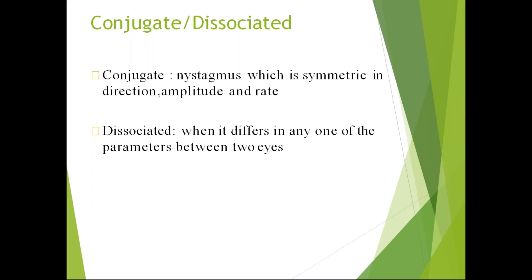Conjugate means symmetric in direction, amplitude, and frequency — the rate is the same in both eyes. Dissociated means it differs between the two eyes in direction, amplitude, or rate. If any of these three parameters differ between the eyes, it is called dissociated nystagmus. Conjugate nystagmus is always the same in both eyes.